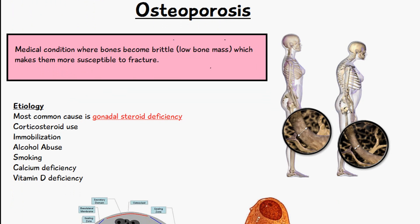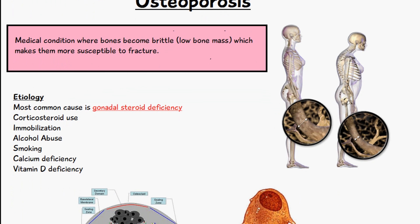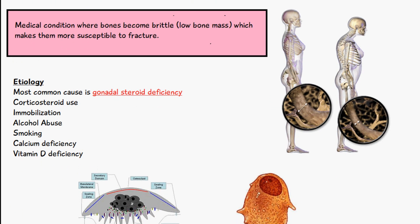The etiology, or the causes, of osteoporosis are various, but the most common cause is gonadal steroid deficiency. This is most commonly seen in women, especially after menopause when estrogen levels are decreased, and it's more common in men as they get older. Other causes include corticosteroid use, immobilization, alcohol abuse, smoking, calcium deficiency, and vitamin D deficiency.